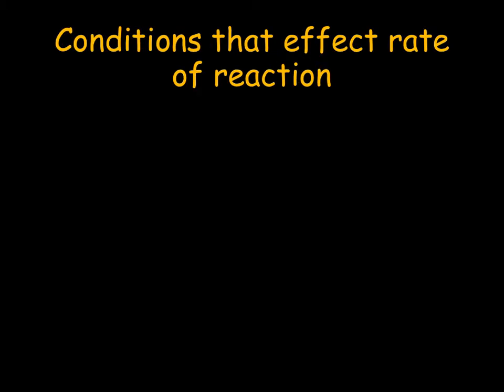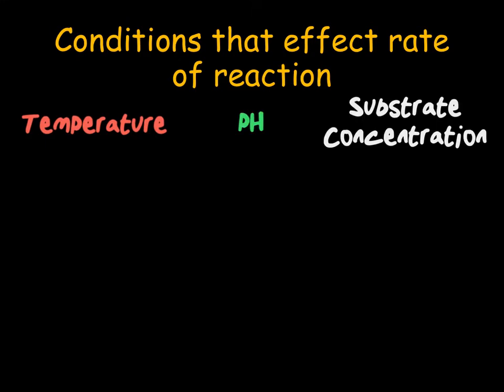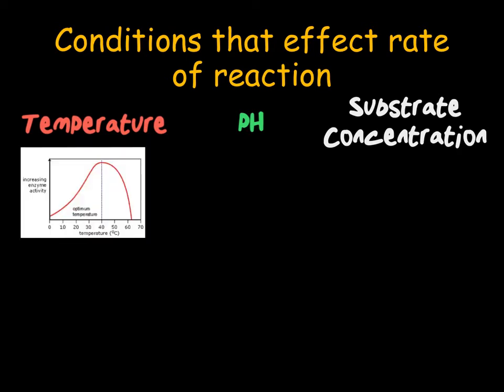For your GCSE, you need to know about three different conditions that can affect the rate of reactions for enzymes: temperature, pH, and substrate concentration. There is a graph you need to know for each of these. Starting with temperature — changing temperature affects the rate of reaction in an enzyme-catalyzed reaction. Initially, as the temperature increases, so does the rate of reaction, until we reach the optimum temperature.